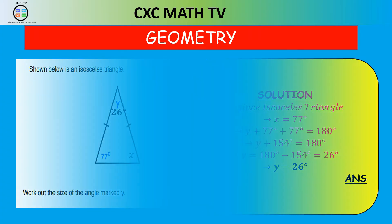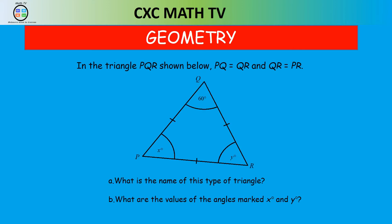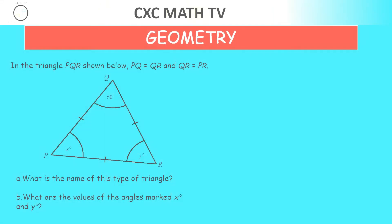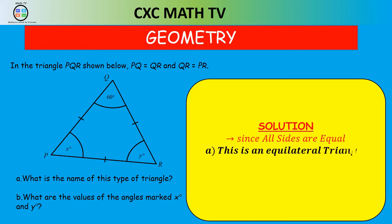Let's look at one more triangle question. In triangle PQR shown below, PQ equals QR and QR equals PR. What is the name of this type of triangle and what are the values of X and Y? Since all sides are equal, it is an equilateral triangle. Both X and Y are 60 degrees, because in an equilateral triangle all sides are equal and all angles are also equal.